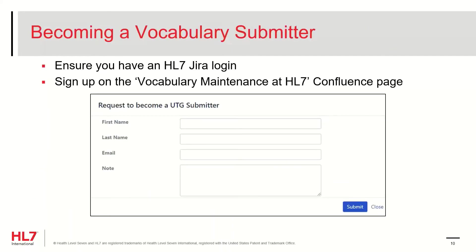To become a submitter, you request the submitter role through the Vocabulary Maintenance at HL7 Confluence page. These pages provide an overview of the UTG process, including how to become a vocabulary reviewer or submitter, as well as a brief overview of each process step and links to more detailed information and documentation. Once you have a Confluence account, click the Request Submitter Permissions link from the Vocabulary Maintenance at HL7 page.